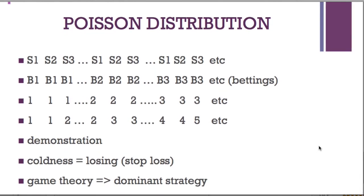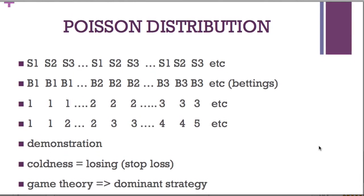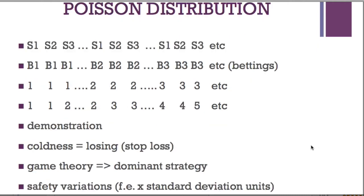But in game theory — I studied economy and after accountancy, in game theory — it's what we call the dominant strategy. You have to play like this, but you can be unlucky, so you need a stop loss and we can build in safety variations. You can use standard deviation units.